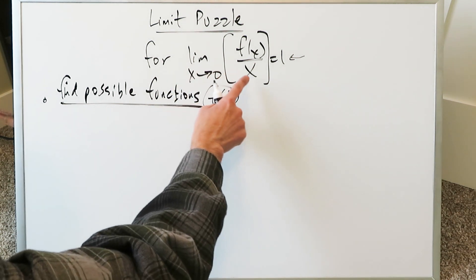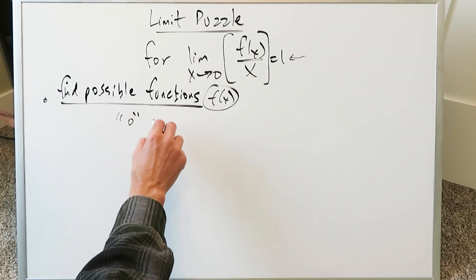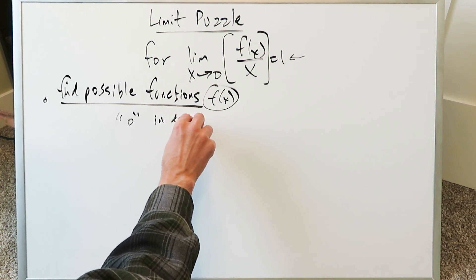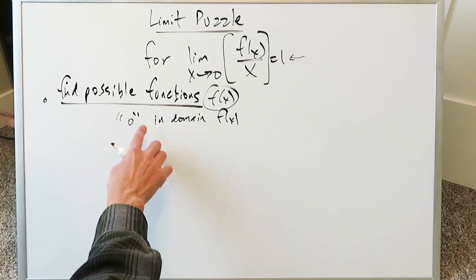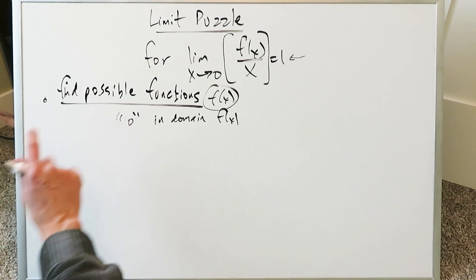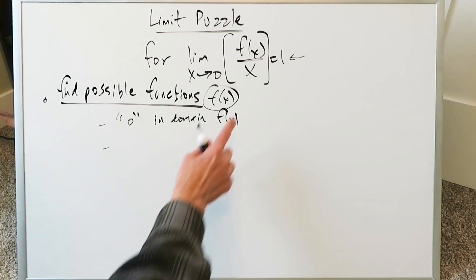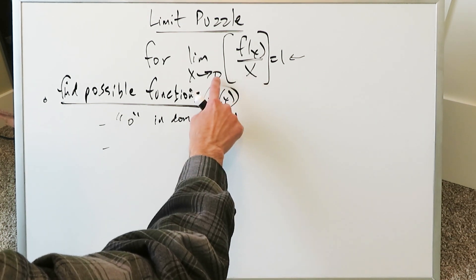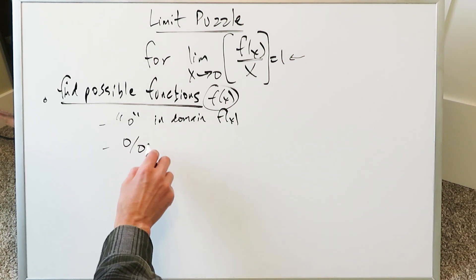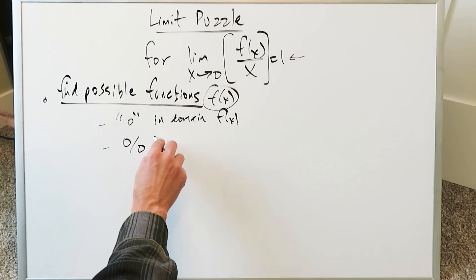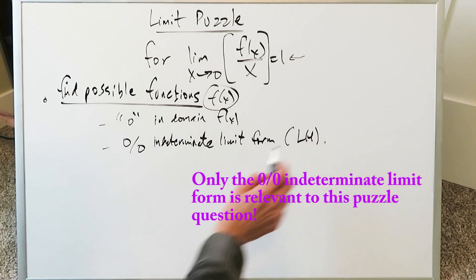When x approaches 0, you want to think about those possible functions where 0 would be in the domain of f(x) — that is, when you graph your function, it would go through the origin. Since you have x in the denominator, putting 0 in directly gives 0 in the denominator. You want functions which give you a 0/0 indeterminate limit form, for which you can then use L'Hôpital's rule.